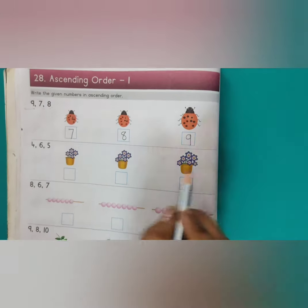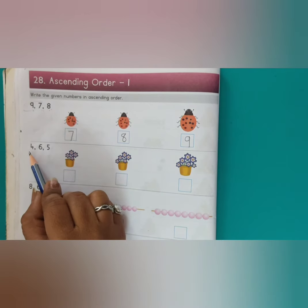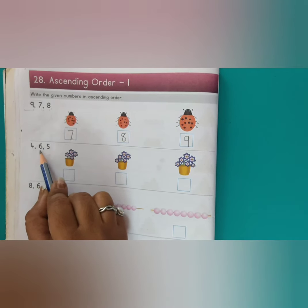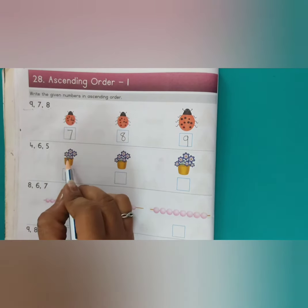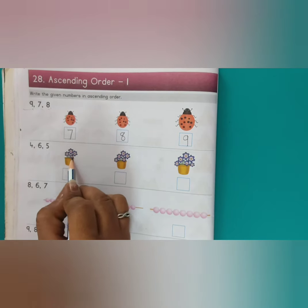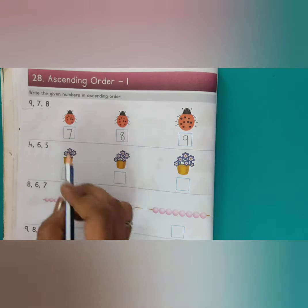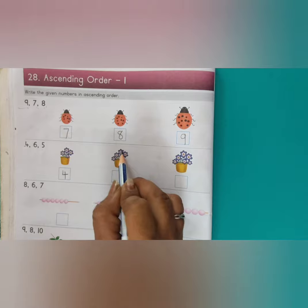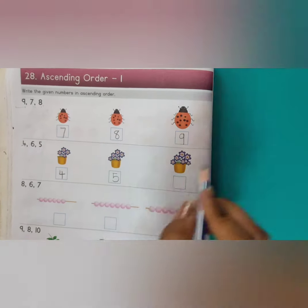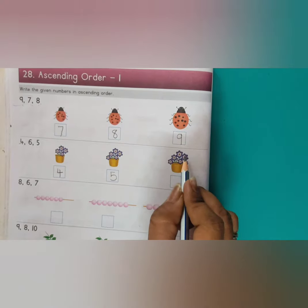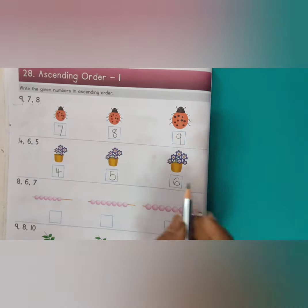फिर यहाँ पर flowers की picture है ना? तो first time count करेंगे. यहाँ पर कौन सा नमबर दिया है? 4, 6, 5. उसे हमें ascending order में लिखना है. तो 1, 2, 3, 4 — तो यह 4 है ना? तो यहाँ पर हम 4 लिखेंगे. फिर 1, 2, 3, 4, 5 — फिर हम कौन सा नमबर लिखेंगे? 5. फिर 1, 2, 3, 4, 5, 6 — तो हम यहाँ पर 6 लिखेंगे.